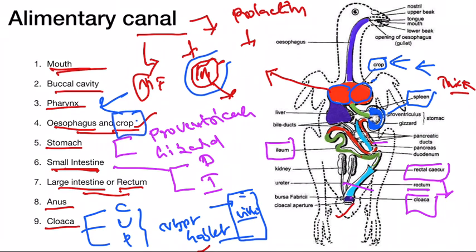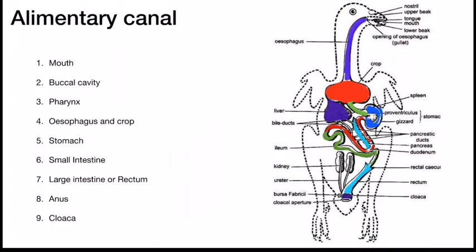The crop produces crop milk in pigeons. The ileum of the intestine opens into the large intestine, and at this junction rectal caeca are present. The rectal caeca help with absorption of water from the fecal matter, and also release some digestive juices helpful for digesting fibers of the fecal matter.